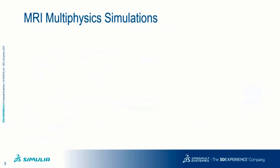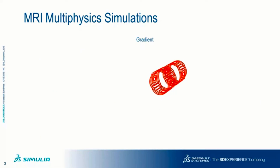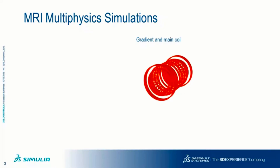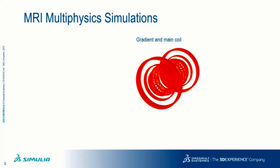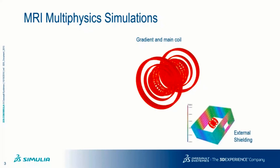So why are we calling this a multiphysics simulation e-seminar? We have gradient coils available for the x, y, and z directions. Around the gradient system we have the main coil creating the strong static field, and an active shielding coil to avoid too-strong magnetic fields outside of our MR system. Even with active shielding, we may also have some external passive shielding in the treatment room.